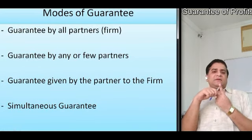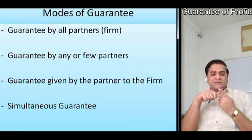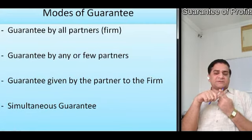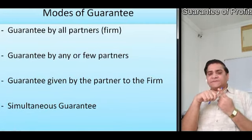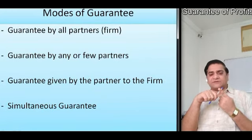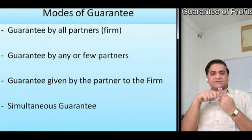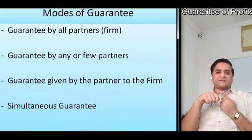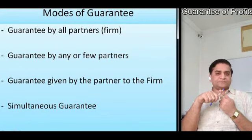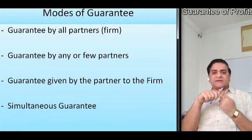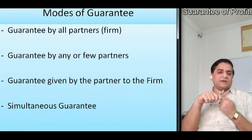The first one would be the plain Guarantee case wherein the Guarantee is given by all the partners — in other words, the Guarantee is given by the firm. Say for example A, B and C are partners sharing profits equally. Partner C is guaranteed that his share in the profits for the year will not be less than 20,000 rupees per annum. If nothing specific is mentioned, this is a Guarantee from all the remaining partners or from the firm.